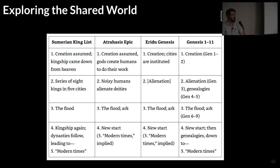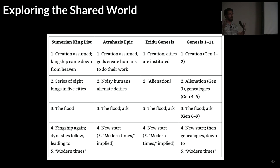Think about that for a minute: chapters 12 through 50 cover about five generations, while chapters 1 through 11 cover untold generations — literally no telling how far back Genesis 1 through 11 goes, thousands of years at minimum, billions at the upper limit — and then the last portion of Genesis really slows down. Because of that distinct shift in tone, most scholars recognize Genesis 1 through 11 as kind of its own thing, related to Genesis 12 through 50 and definitely integrated, but doing something a little bit different.